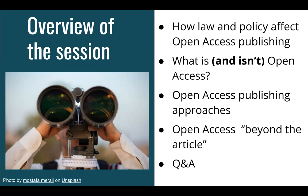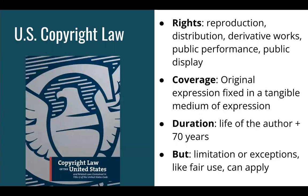Finally, we'll talk about open access publishing beyond the scholarly article — things like books, preprints, data, and other materials — and then we'll have time for Q&A. Before we dig into the nuts and bolts of open access publishing, it's important to understand how law and UC policy make open access possible. So let's start with a quick overview of US copyright law.